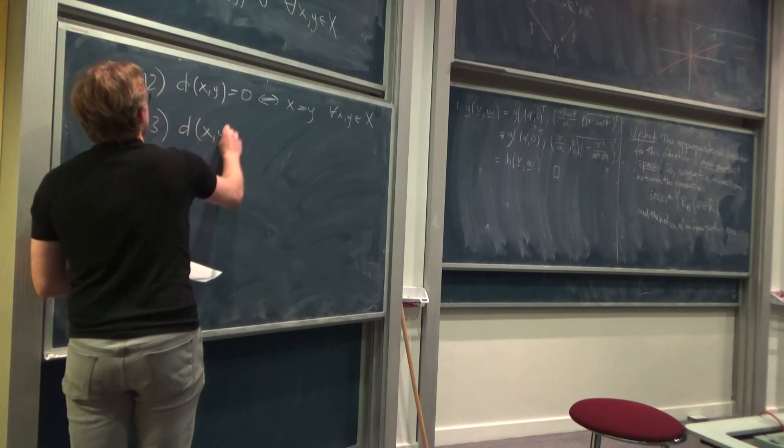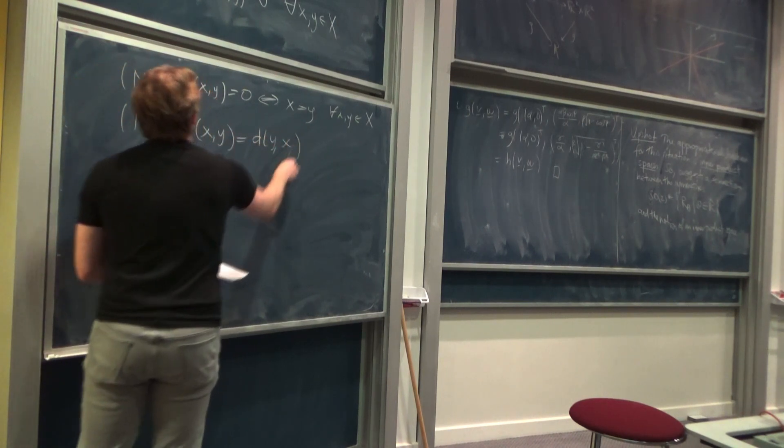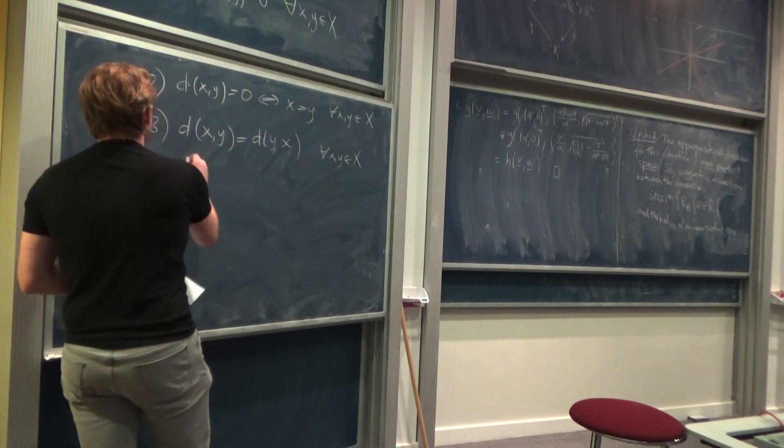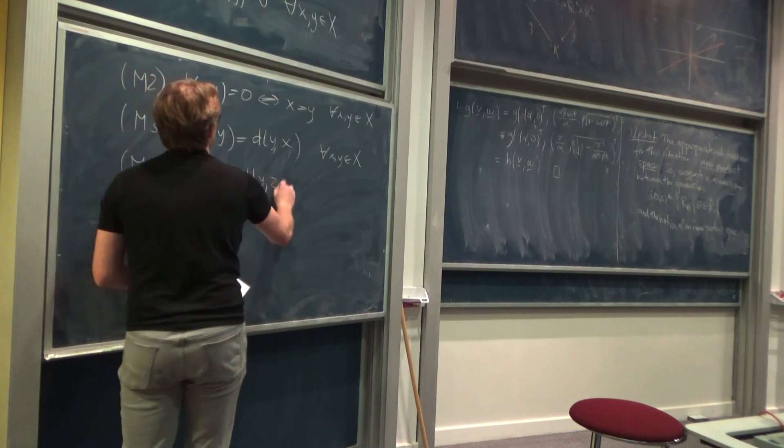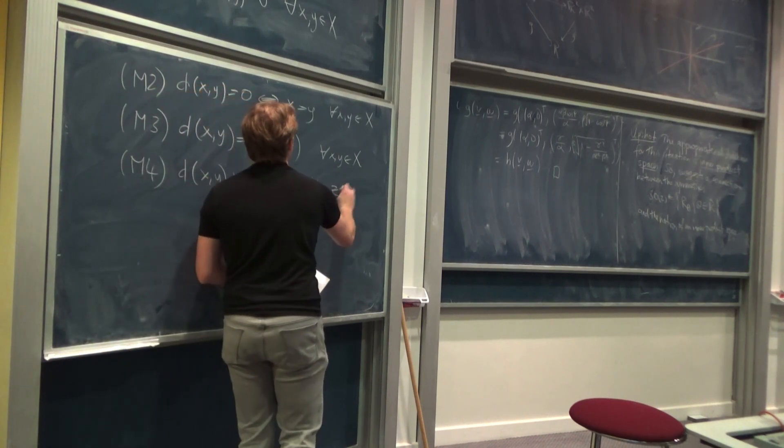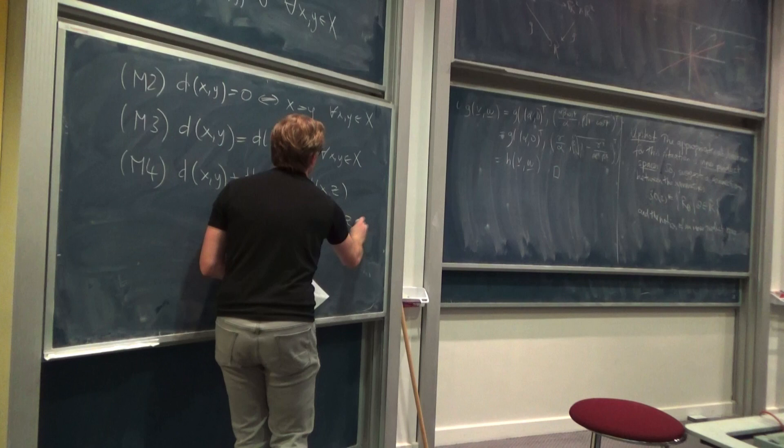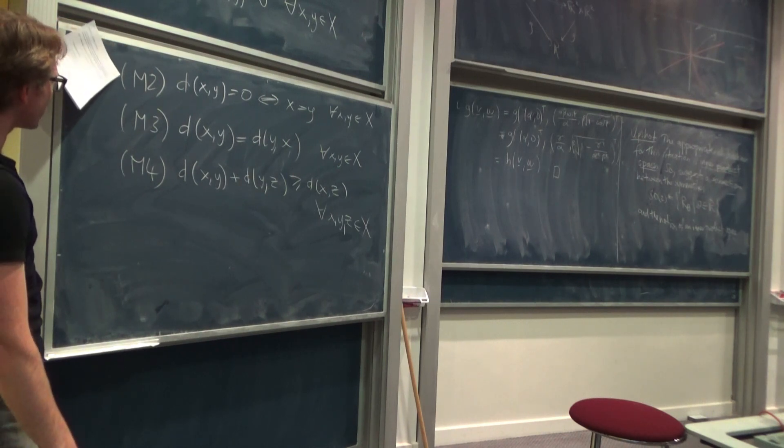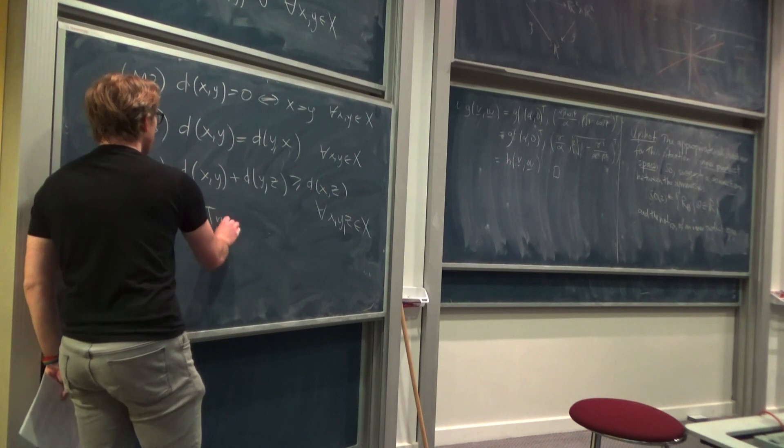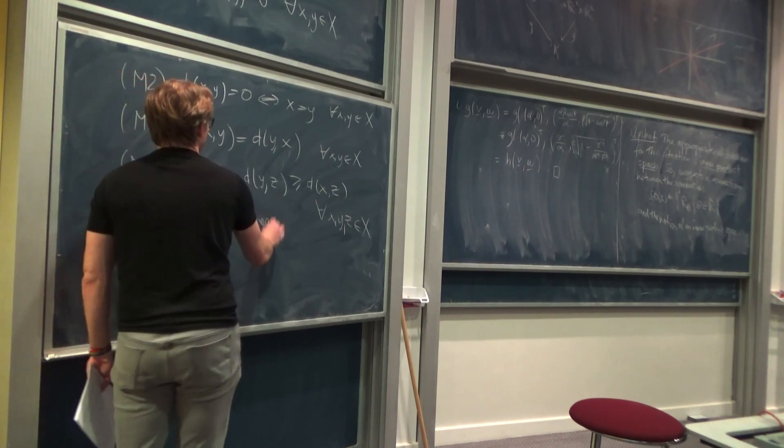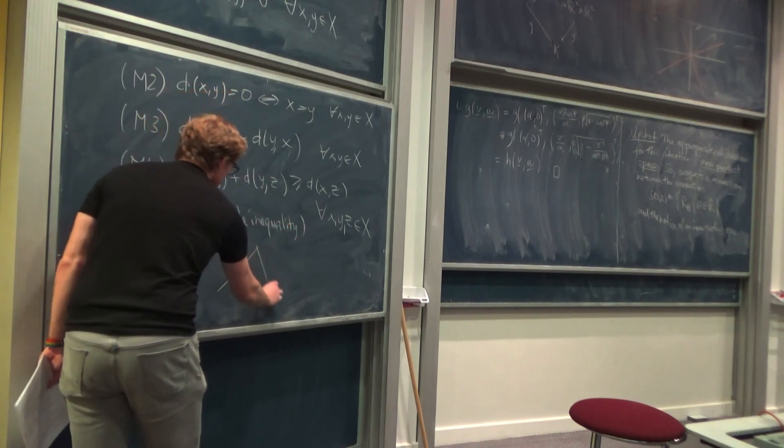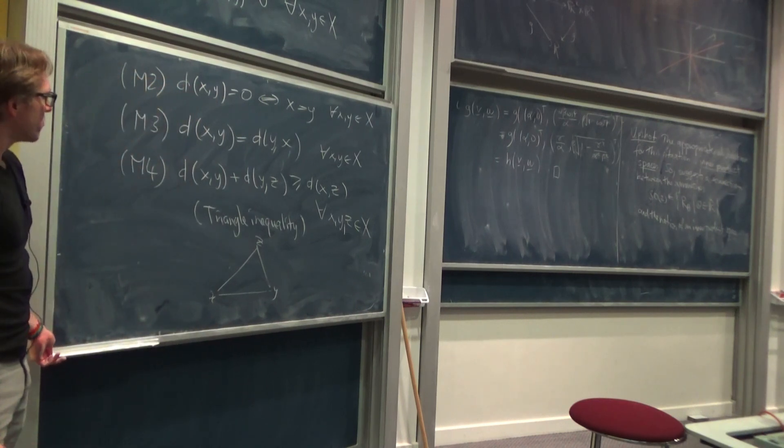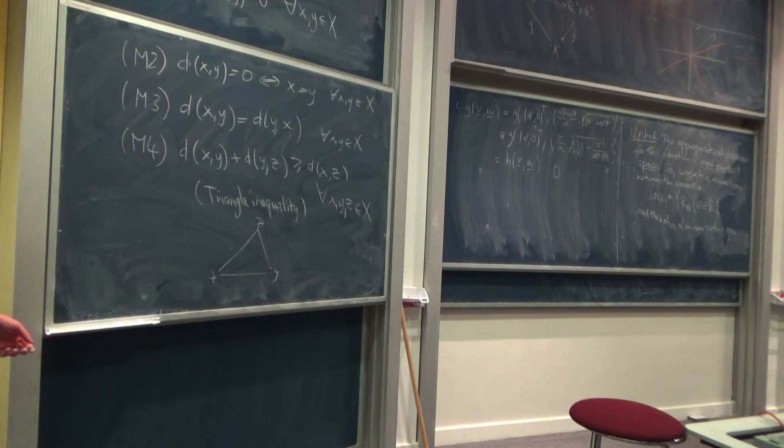So the only pairs of points which are at zero distance are pairs where both elements are the same. Three, the distance is symmetric. And four. So, well, you could say that's called non-negativity. That's called separation. That's called symmetry. This is, of course, the triangle inequality. Okay, for the obvious sort of reason. Okay, so those are the axioms. That's what a metric space is.